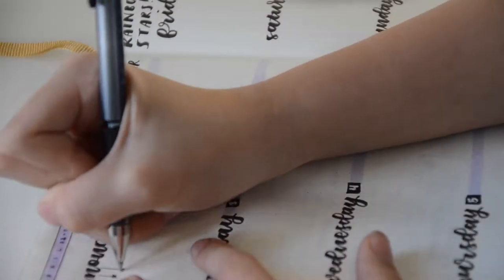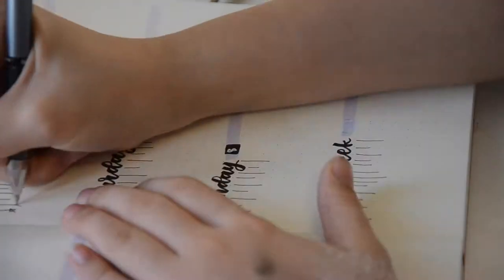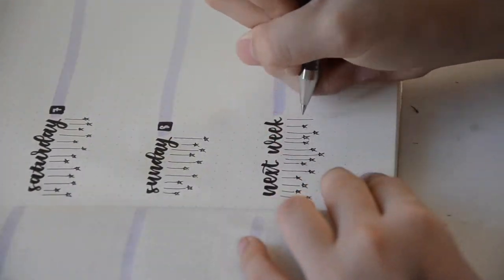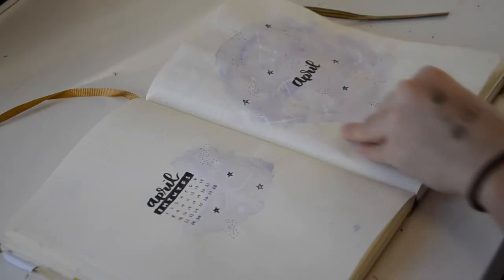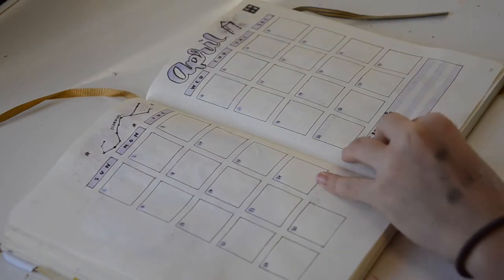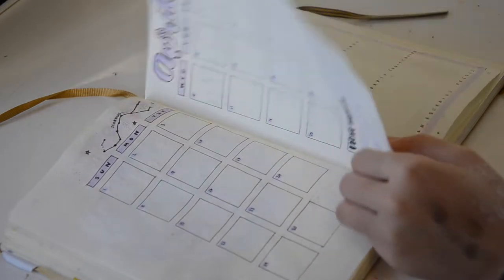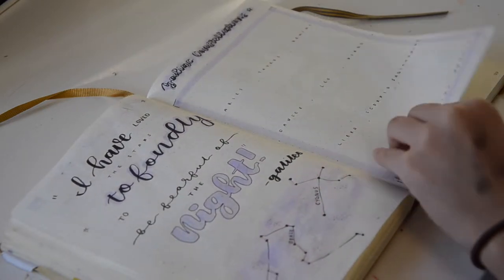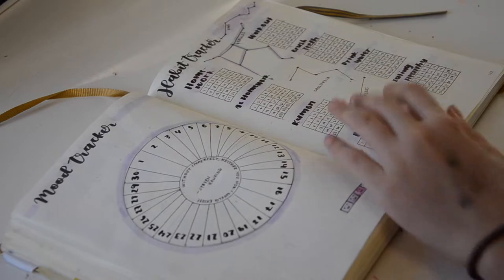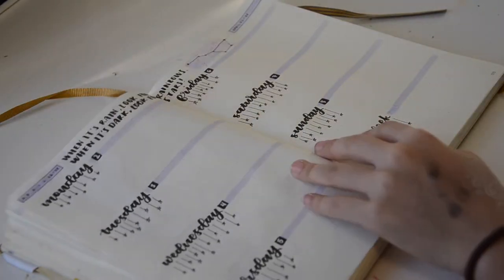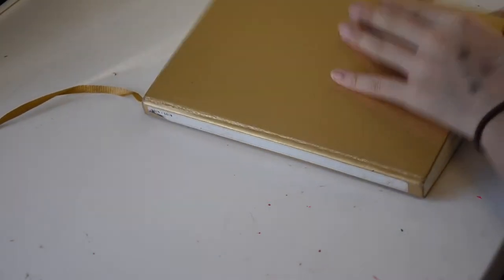I drew stars hanging from strings under the days of the week, and I loved how this turned out. So here's my flip through. I have my cover page, my monthly overview page, my quote page and zodiac constellation page, my mood and habit tracker, and finally my weekly spread. I'll see you next time. Bye.